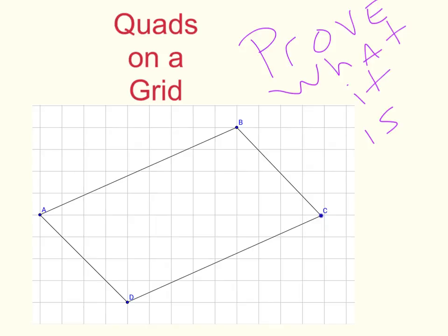What we're going to get out of them is called quads on a grid, where we put a quadrilateral on a grid and you're going to have to prove what it is based on slope and Pythagorean theorem.